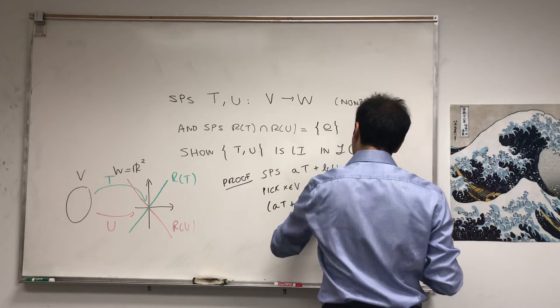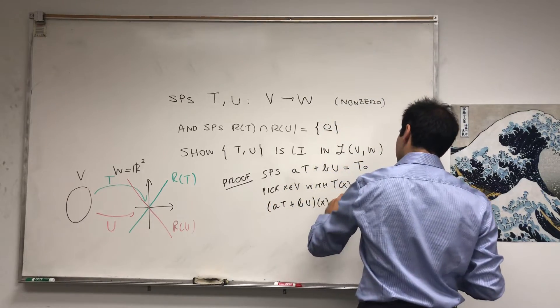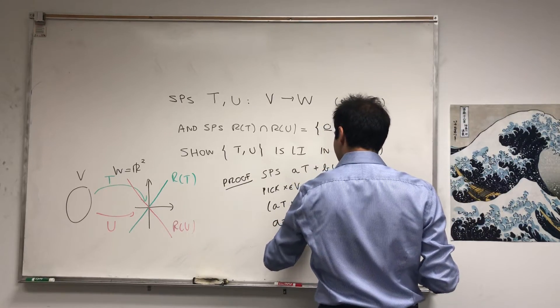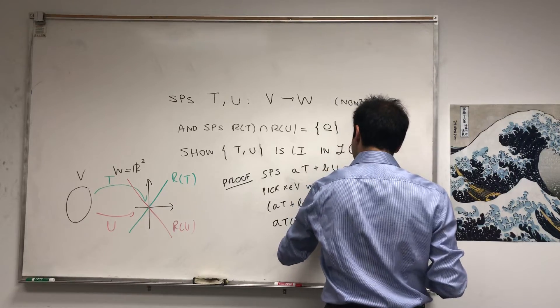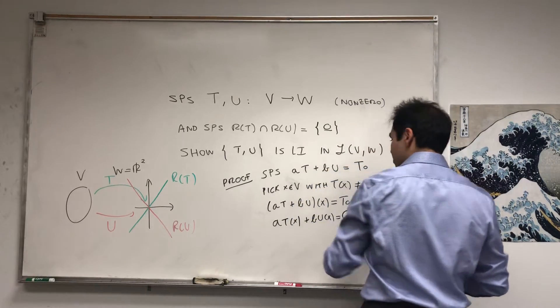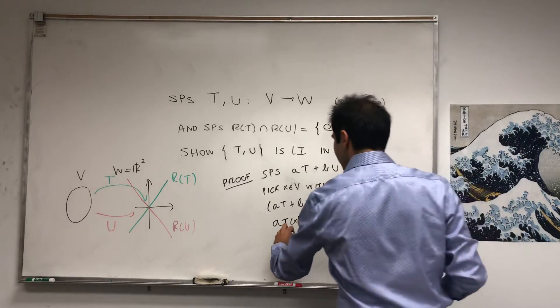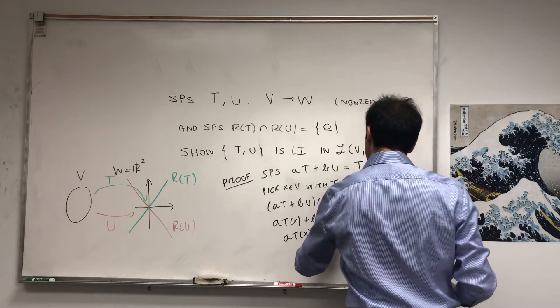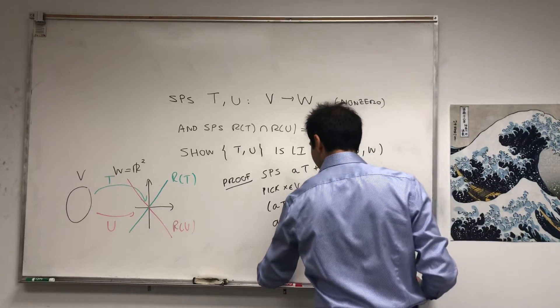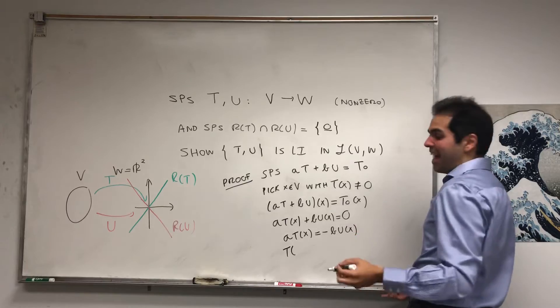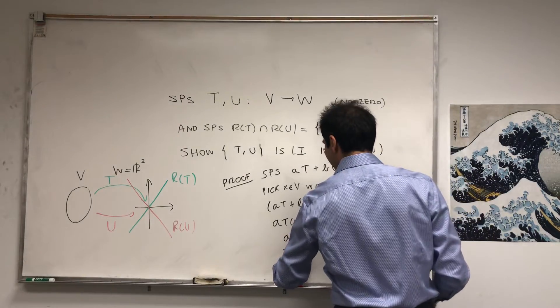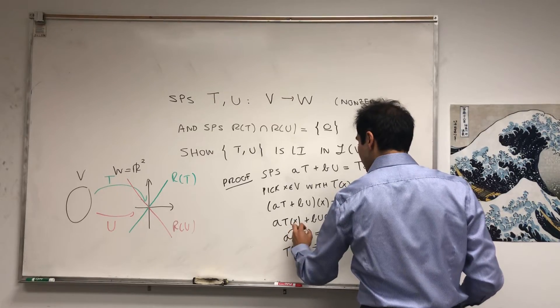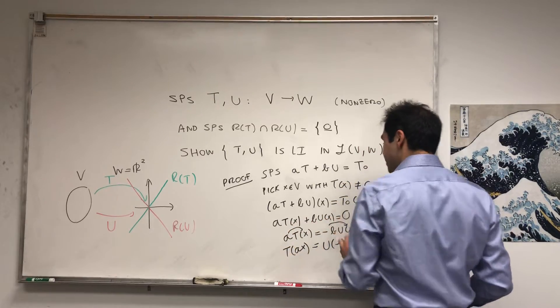So this is A*T(X) plus B*U(X) equals zero. And then let's just play around with this. So A*T(X) equals minus B*U(X). Because it was tax season, we get T(AX) equals U(minus BX), and that just follows because T and U are linear.